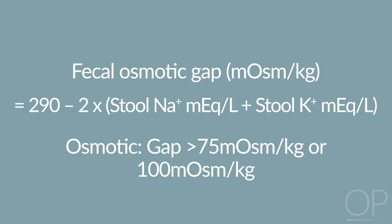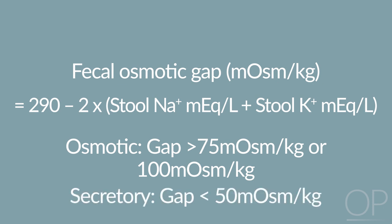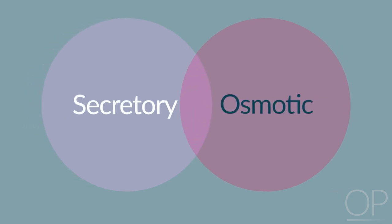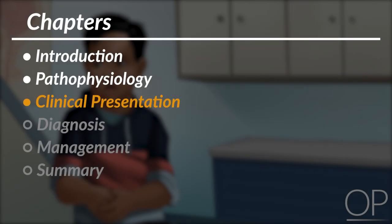Osmotic diarrheas are defined as having a gap greater than 75 milliosmols per kilogram, or 100 milliosmols per kilogram depending on the reference, with higher values being more specific. Secretory diarrhea is defined as having a gap less than 50 milliosmols per kilogram. While it can be useful to think about the pathophysiology of diarrhea as either secretory or osmotic, in reality many diarrheas are a mix of the two processes, which is often related to the nutrient intake at the time of stool testing.